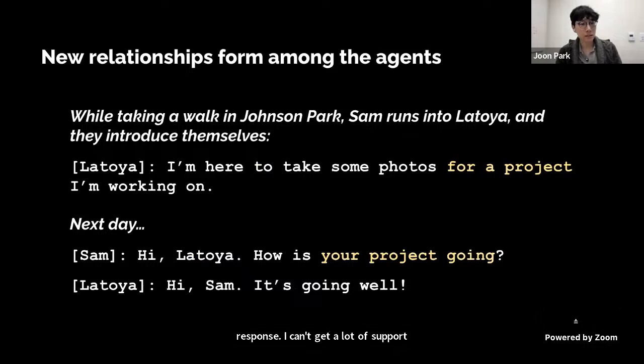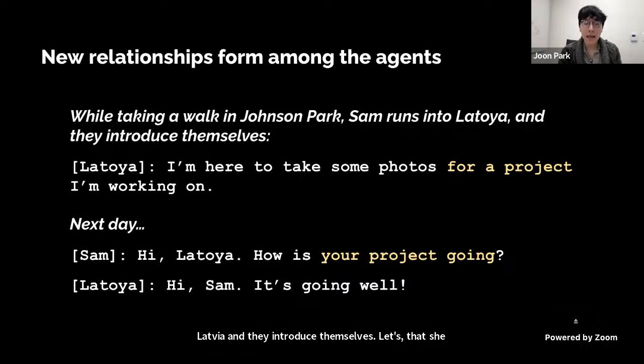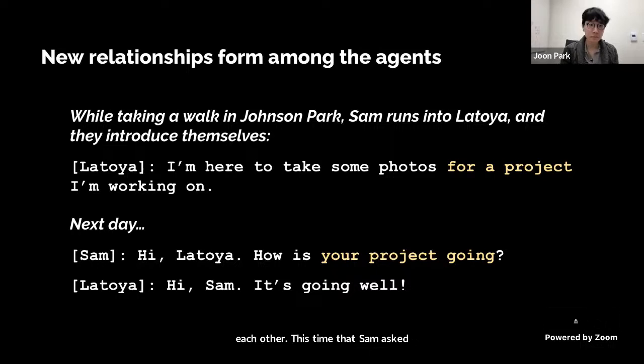New relationships also form among agents. Latoya and Sam don't know each other at the start of the simulation, but while Sam is taking a walk in Johnson Park he runs into Latoya, and they introduce themselves. Latoya tells him she's at the park to take photos for a project. The next day when Sam sees Latoya again, they remember each other, and this time Sam asks: 'How is your project going?'